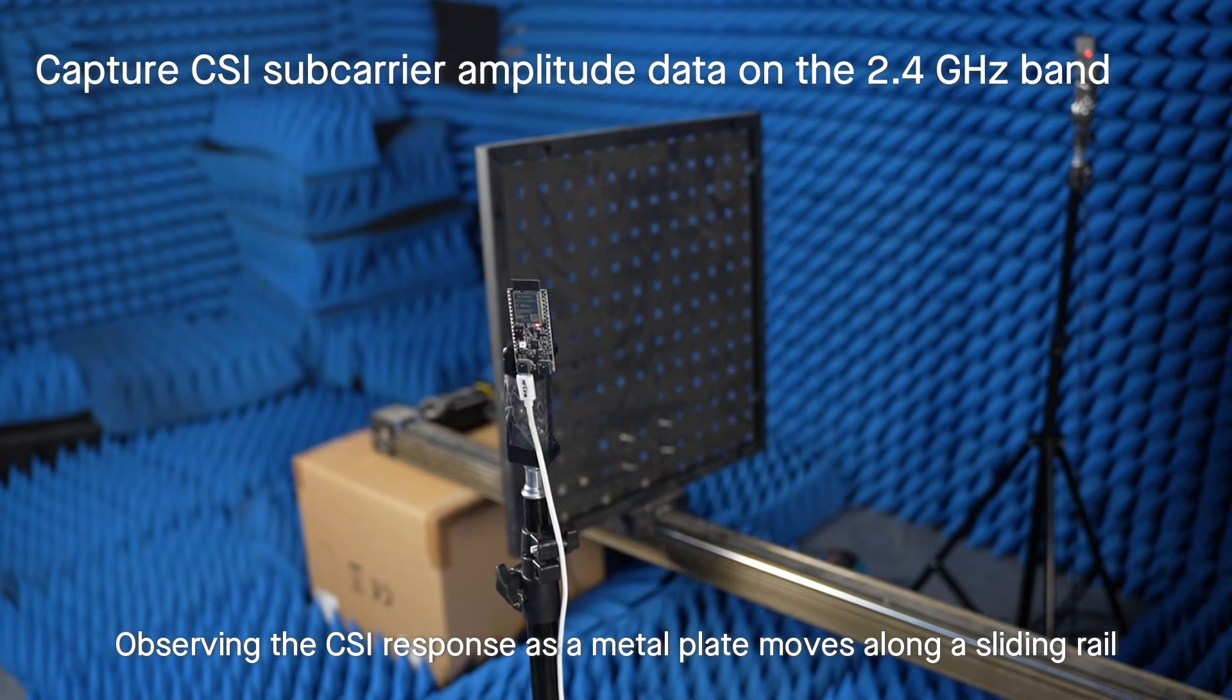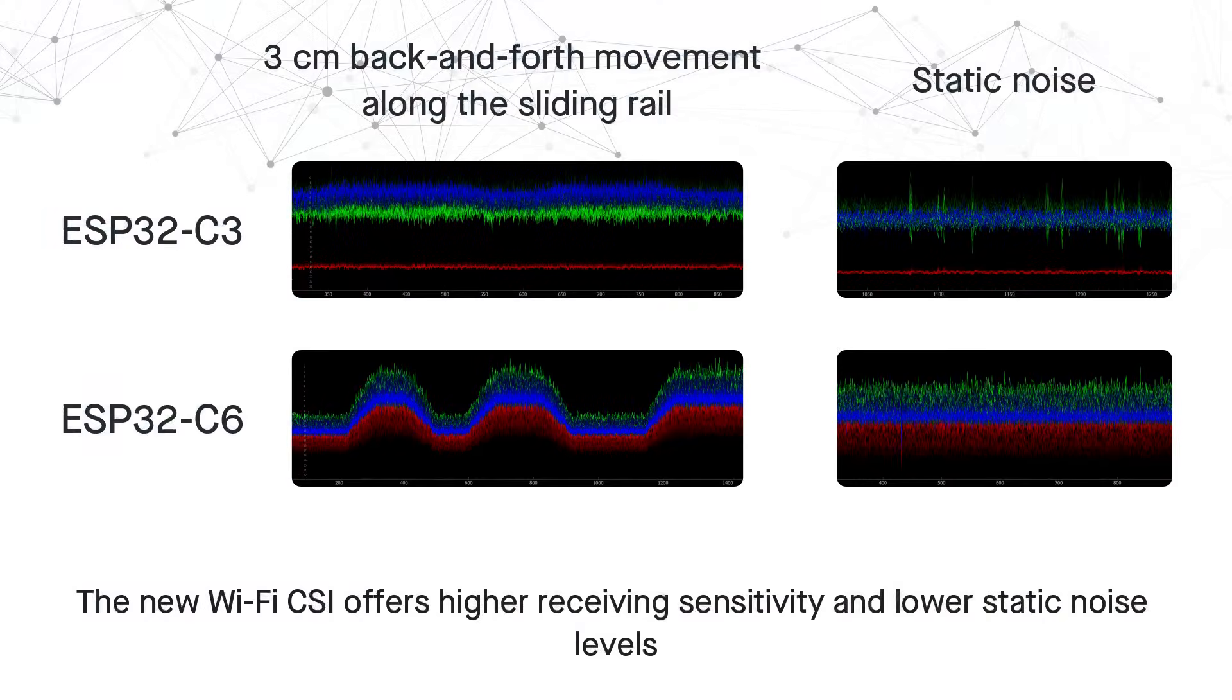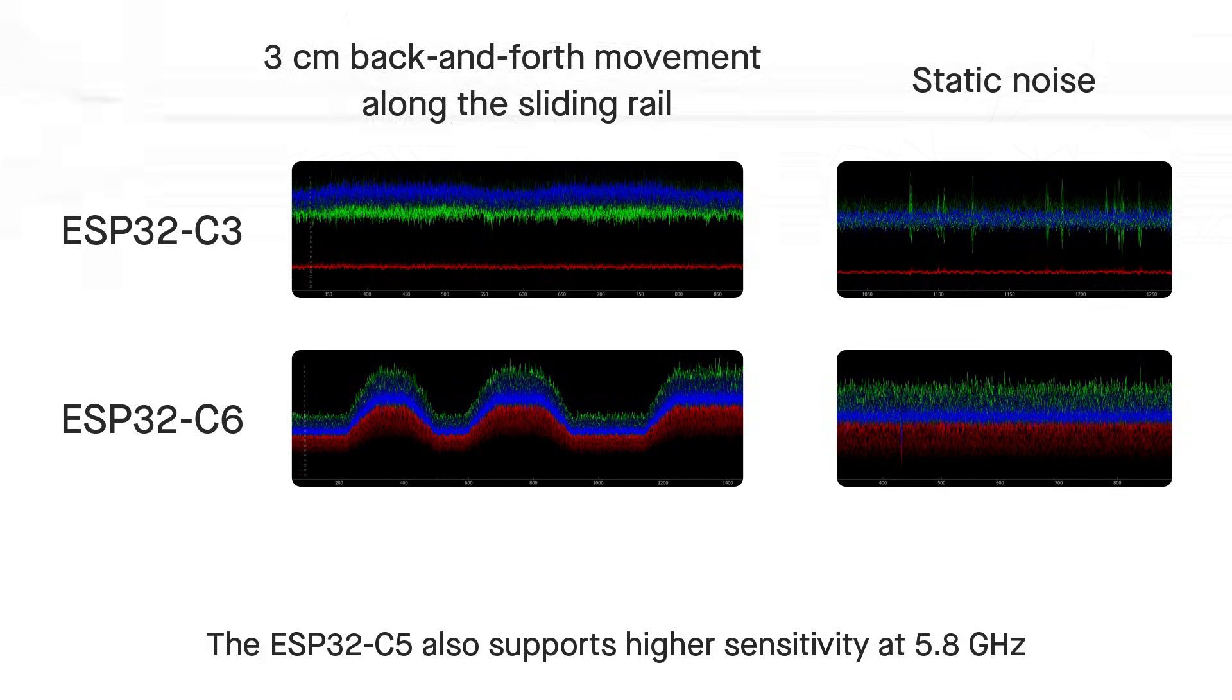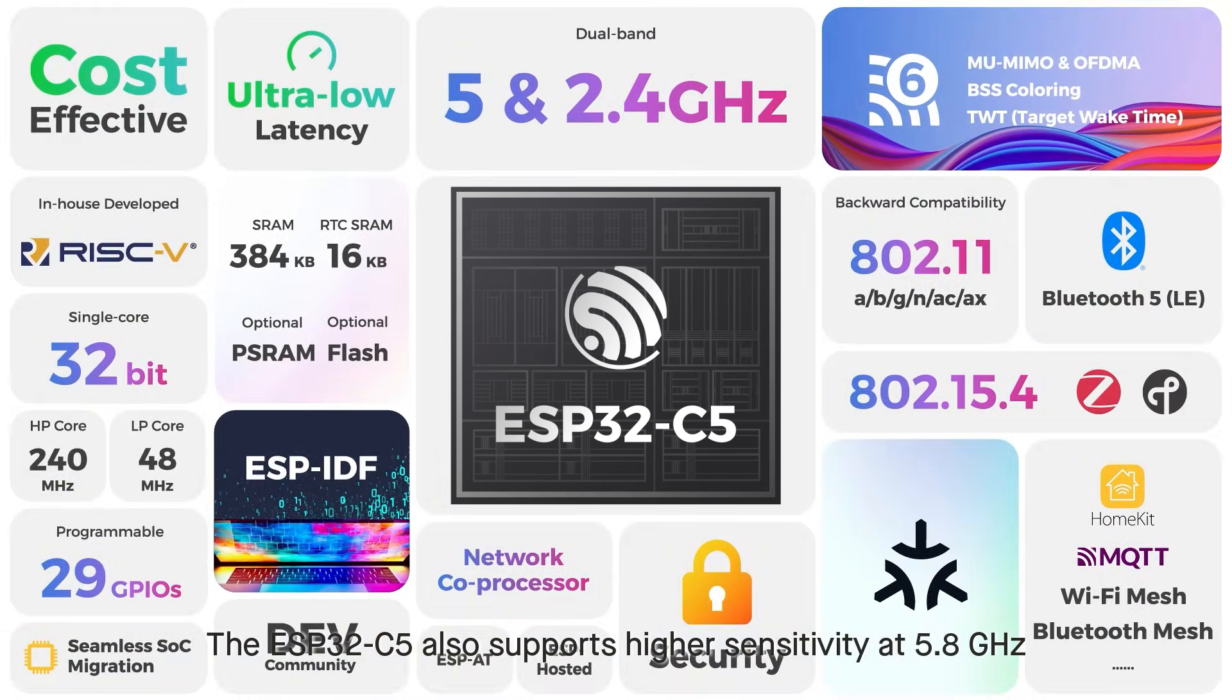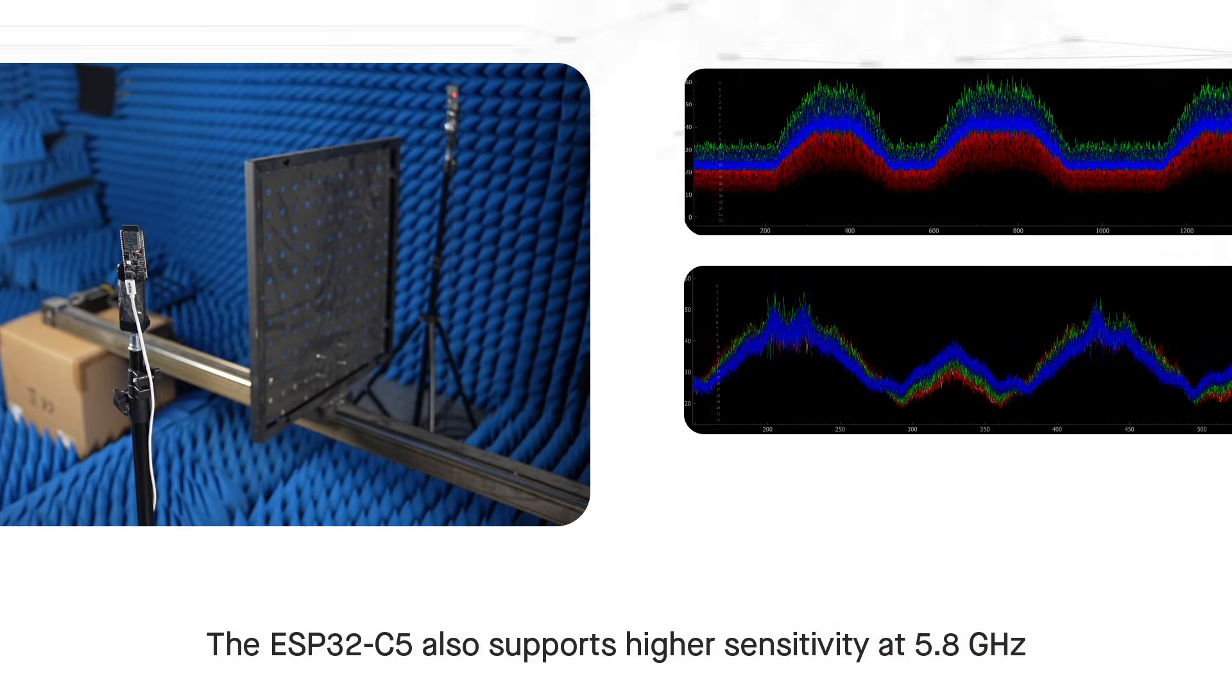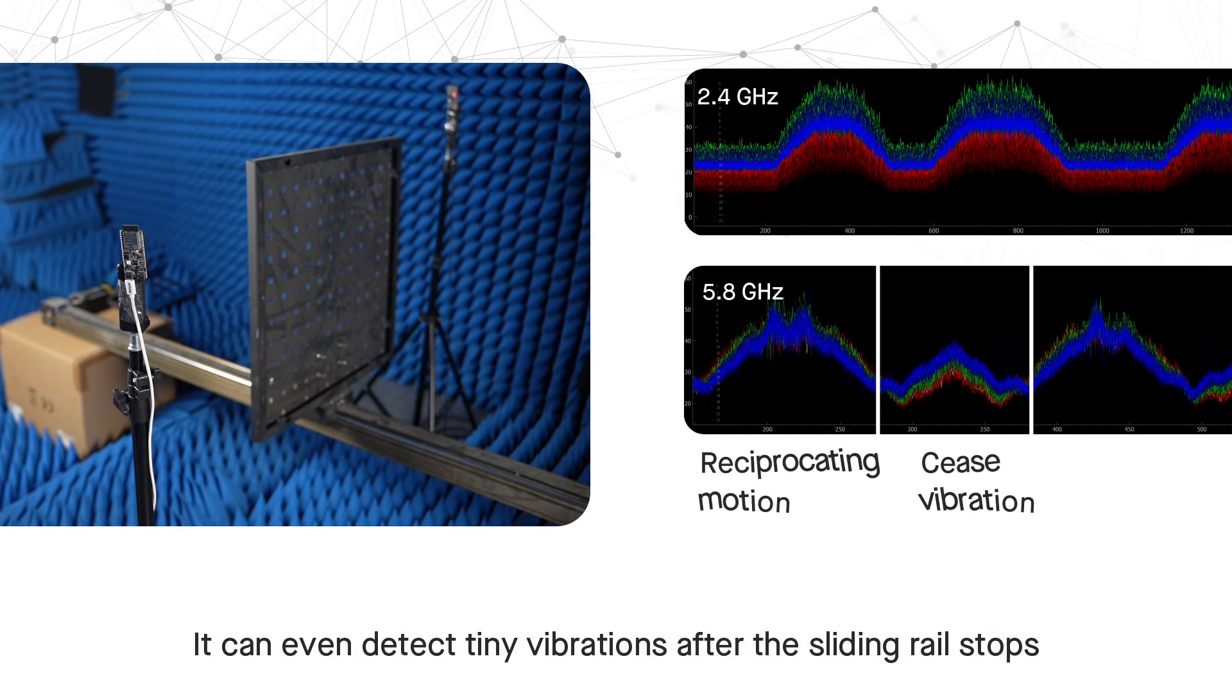As a metal plate moves along the sliding rail, the new Wi-Fi CSI offers higher receiving sensitivity and lower static noise levels. The ESP32-C5 also supports higher sensitivity at 5.8 gigahertz—it can even detect tiny vibrations.